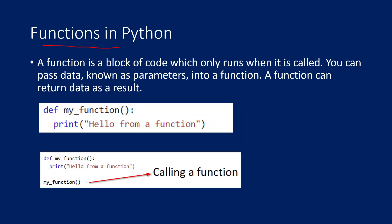A function is nothing but a block of code which you only run whenever you call it. For example, if you have two lines of code which are going to be repeated in your code, you can create a function out of it. Whenever you feel the need of executing those lines of code, you can call that function. It's a block of code saved with a name — and whenever you call that function, at that time only that code will run.